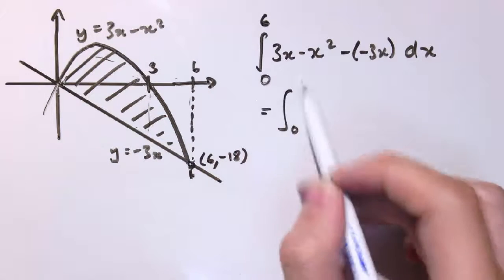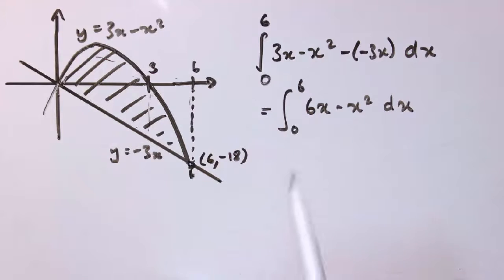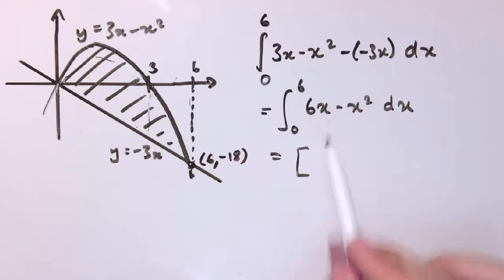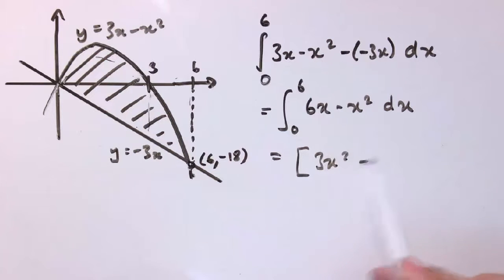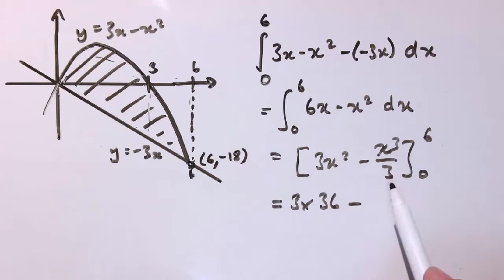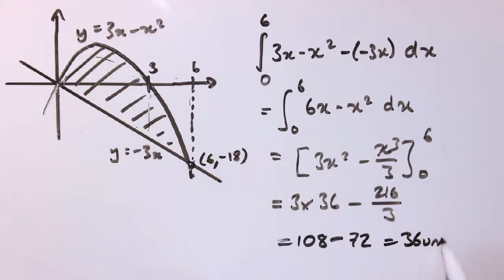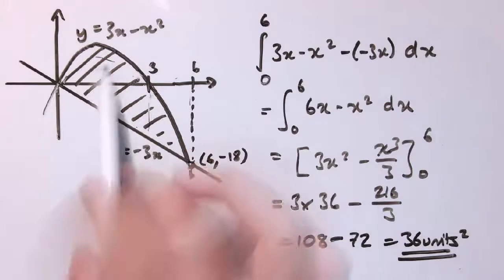So I get 3x minus minus 3x, which is 6x minus x squared, and I integrate that between 0 and 6. Doing the integration gives 3x squared minus x cubed over 3, evaluated between 0 and 6. Plugging in 6: that's 3 times 36 minus 216 over 3, which is 108 minus 72, giving 36 units squared. That is the final answer — the area enclosed between these two curves.